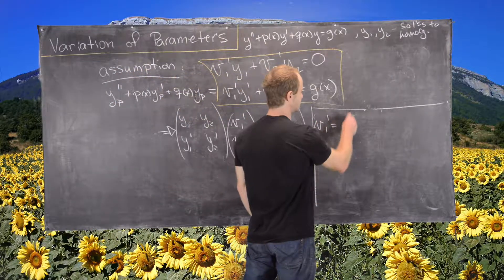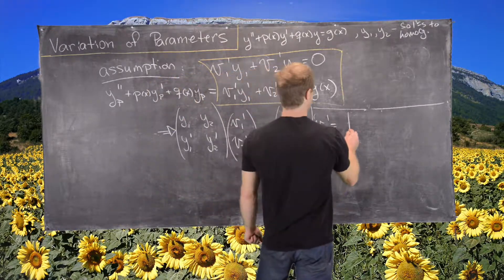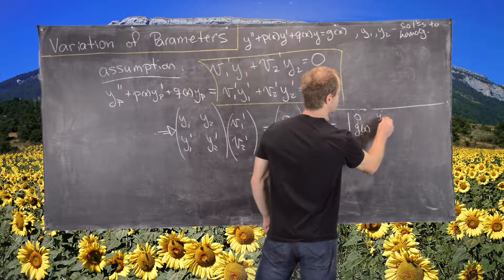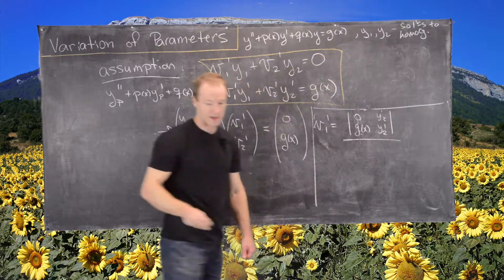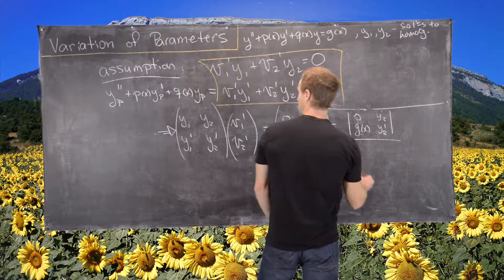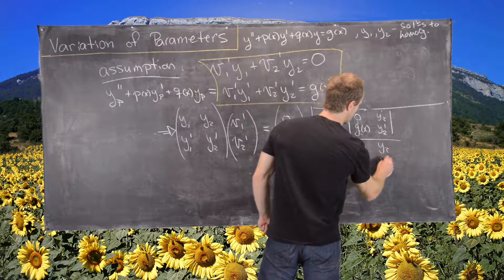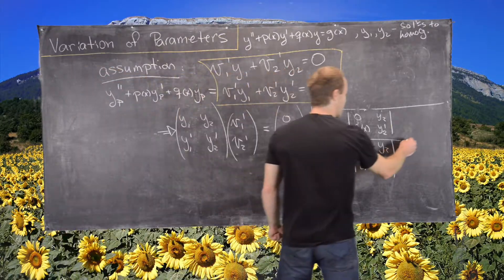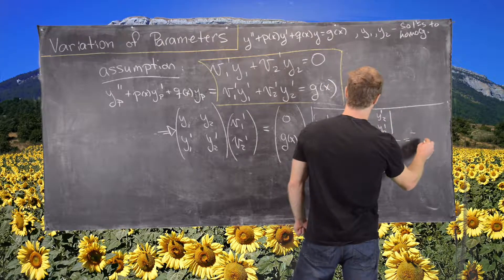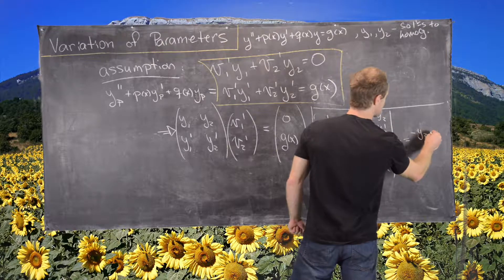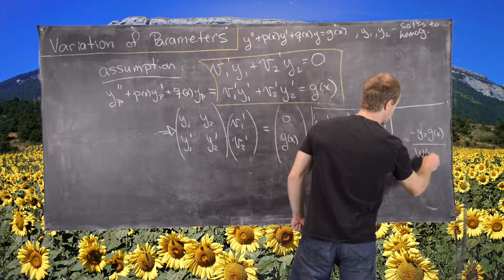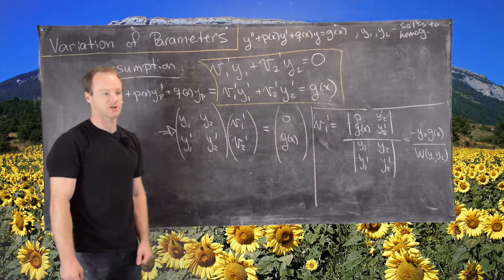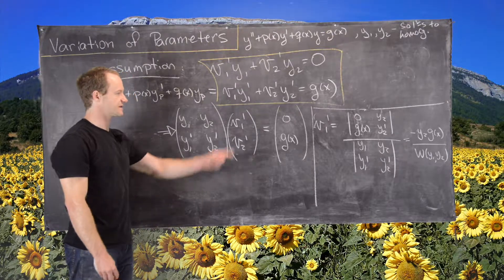Applying Cramer's rule, v1′ equals the determinant of the matrix with (0, g(x)) replacing the first column, divided by the determinant of the original matrix W(y1, y2). Evaluating that determinant gives v1′ = −g(x)·y2 / W(y1, y2), where W is the Wronskian. Similarly, we can write down v2′ using Cramer's rule.